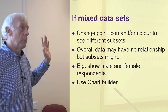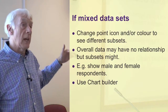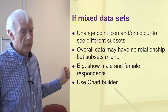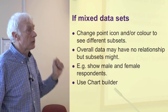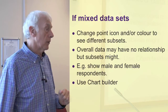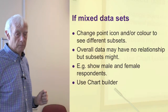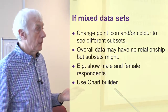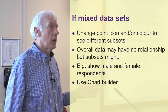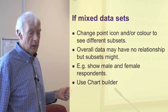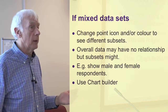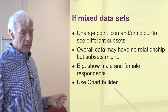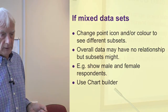Say you had data on all people rather than just women's life expectancy — you might want to show different colored dots for men and women in the scatter plot. You can assign colors depending on another variable. Have a go at trying that using chart builder, because sometimes the overall data may show no strong correlation but the subsets might reveal something the overall chart doesn't.